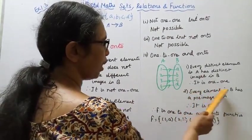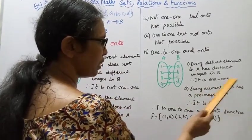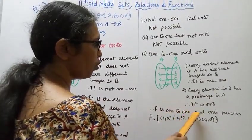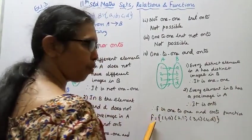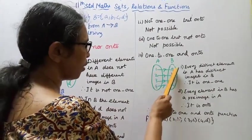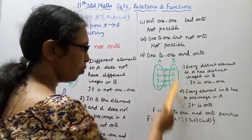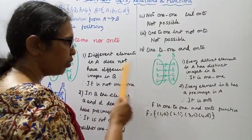It is one-to-one and onto function. It is a bijection. The function is f equals {(1,A), (2,B), (3,C), (4,D)}.